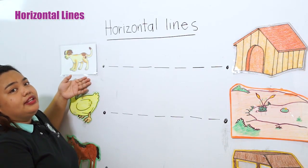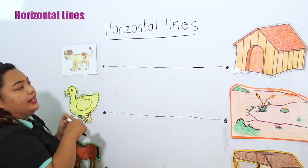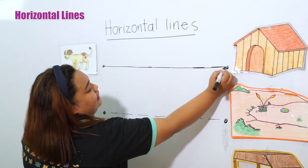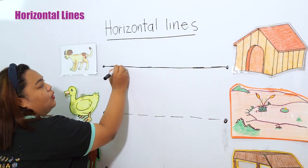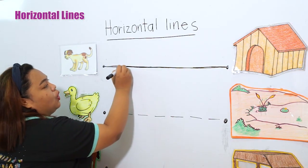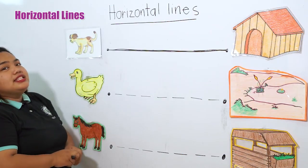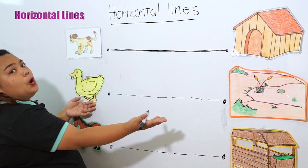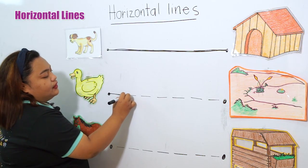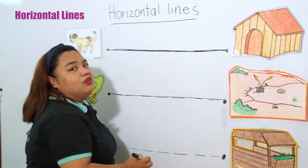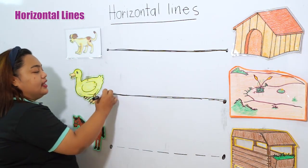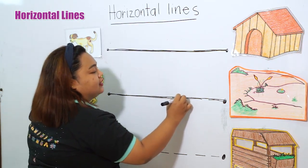First, let's help the dog find its home by tracing the broken lines. Okay — from left, going right. Again, left, going right. Once more, left, going right.